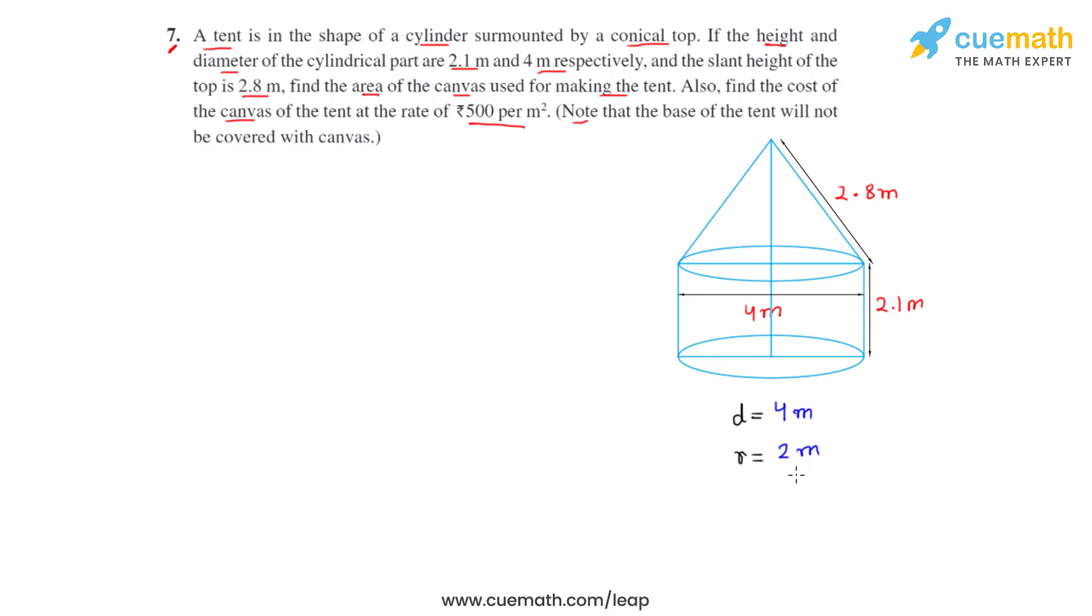Now, since it's given that the base of the tent will not be covered by the canvas, then we will not include the base area into the total surface area that we would be calculating. So visually, the surface area of the tent will then include the curved surface area of the cylinder and the curved surface area of the cone.